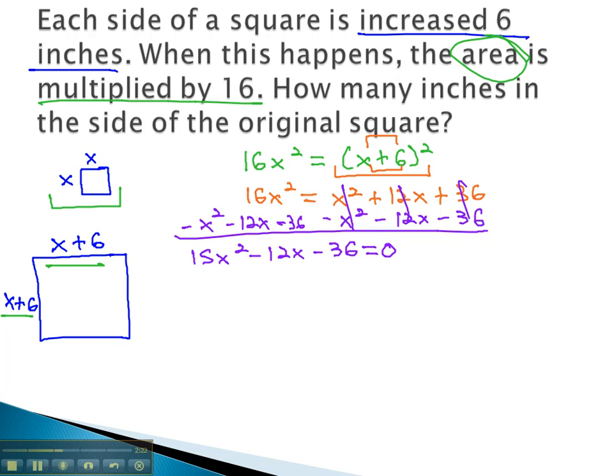Let's start factoring to see if this can be solved. We have a greatest common factor of 3, which leaves us with 5x squared minus 4x minus 12 equals 0. What's left does factor. If you had problems factoring, you could use the quadratic formula on it, but this one factors to 5x plus 6 and x minus 2.